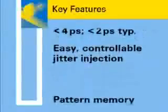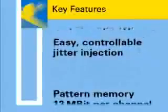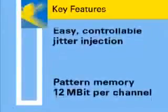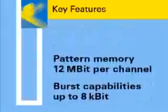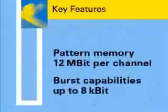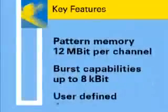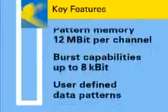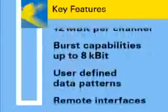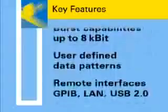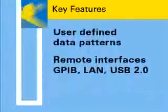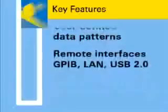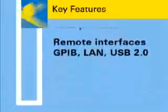In addition, the Agilent 81134A provides several features which make it the perfect serial pattern generator. Examples are the deep 12 megabit pattern memory per channel, its PRBS capabilities, the burst modes, and the possibility to control the instrument remotely via several interfaces, including LAN and USB 2.0.